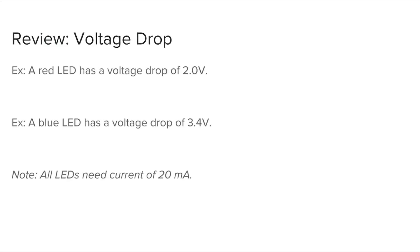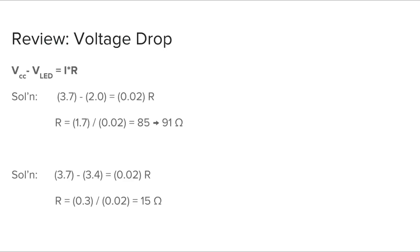If you get too big a voltage drop across your LED, you can fry the LED. Each color has a specific voltage that it needs to have across it. The red ones need a 2 volt voltage drop, and the blue ones need a 3.4 volt voltage drop. Since you know the battery is 3.7 volts and they take 20 milliamps of current, you can calculate the voltage you need across your resistor to have the right voltage across your LED.